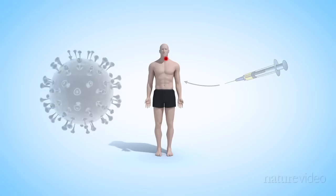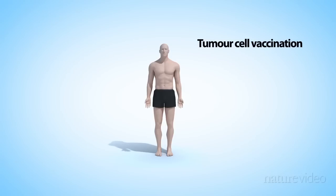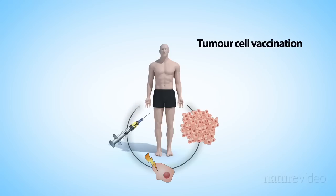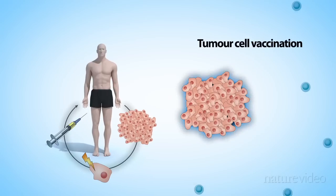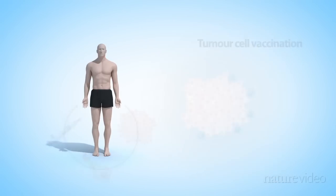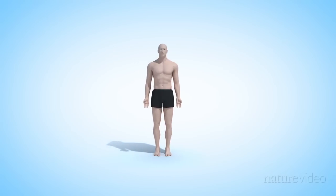It's also possible to vaccinate with a patient's own tumor cells. Some cells are extracted, irradiated to stop them from spreading and then engineered to secrete activating growth factors. When the cells are injected back into the patient, the growth factors alert the immune system to the cancer.